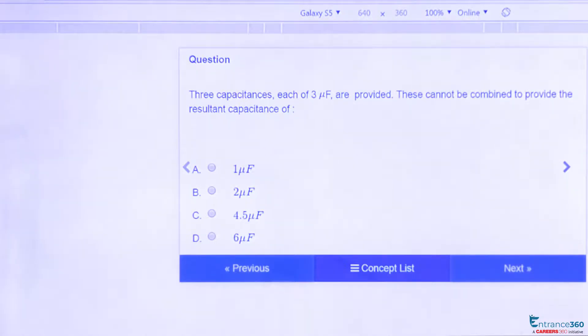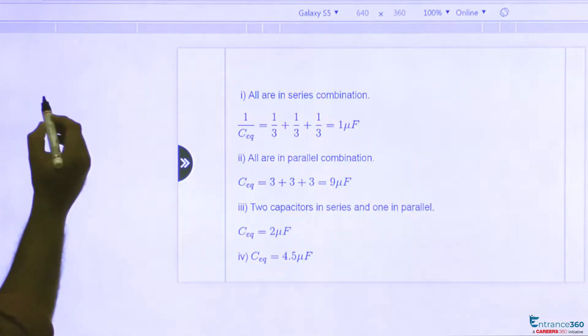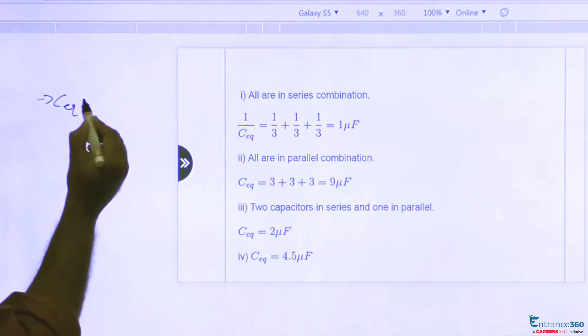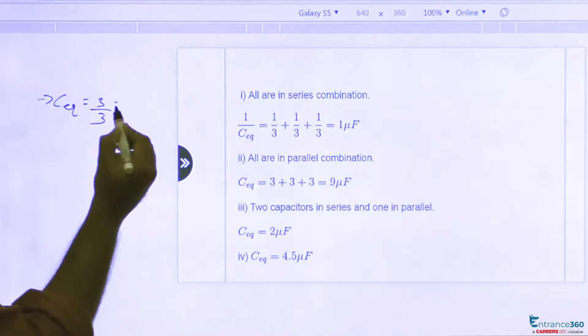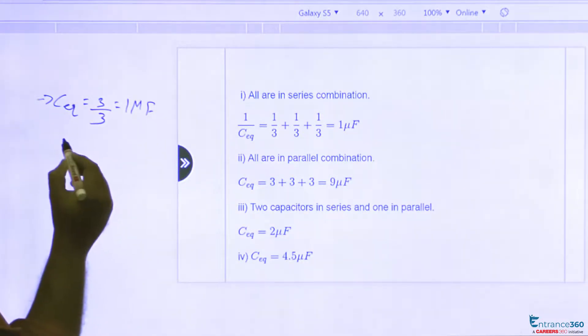Just use the combination of capacitance both in series and parallel. If three μF capacitances are connected in series, C equivalent will be 3 divided by 3, which is equal to 1 μF.